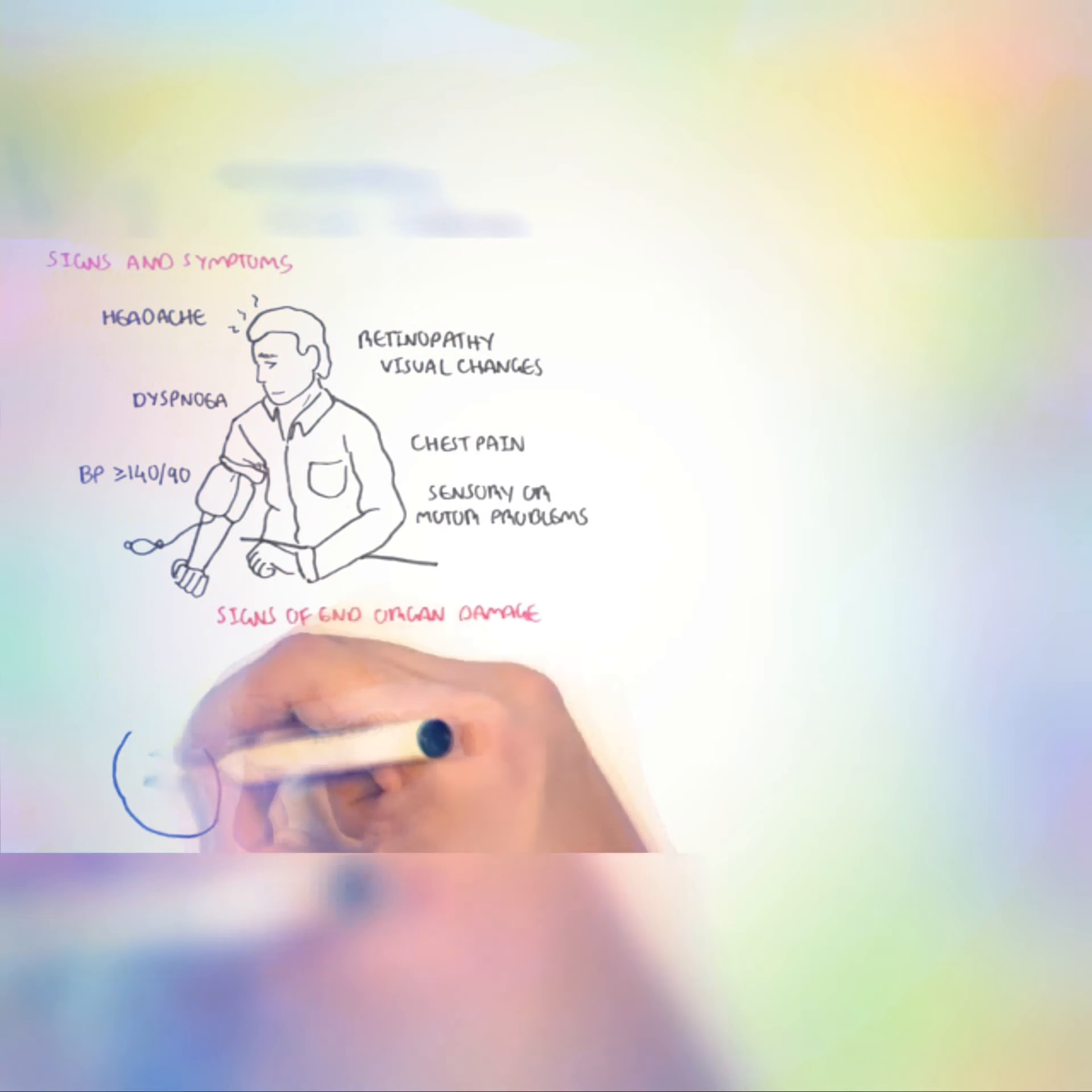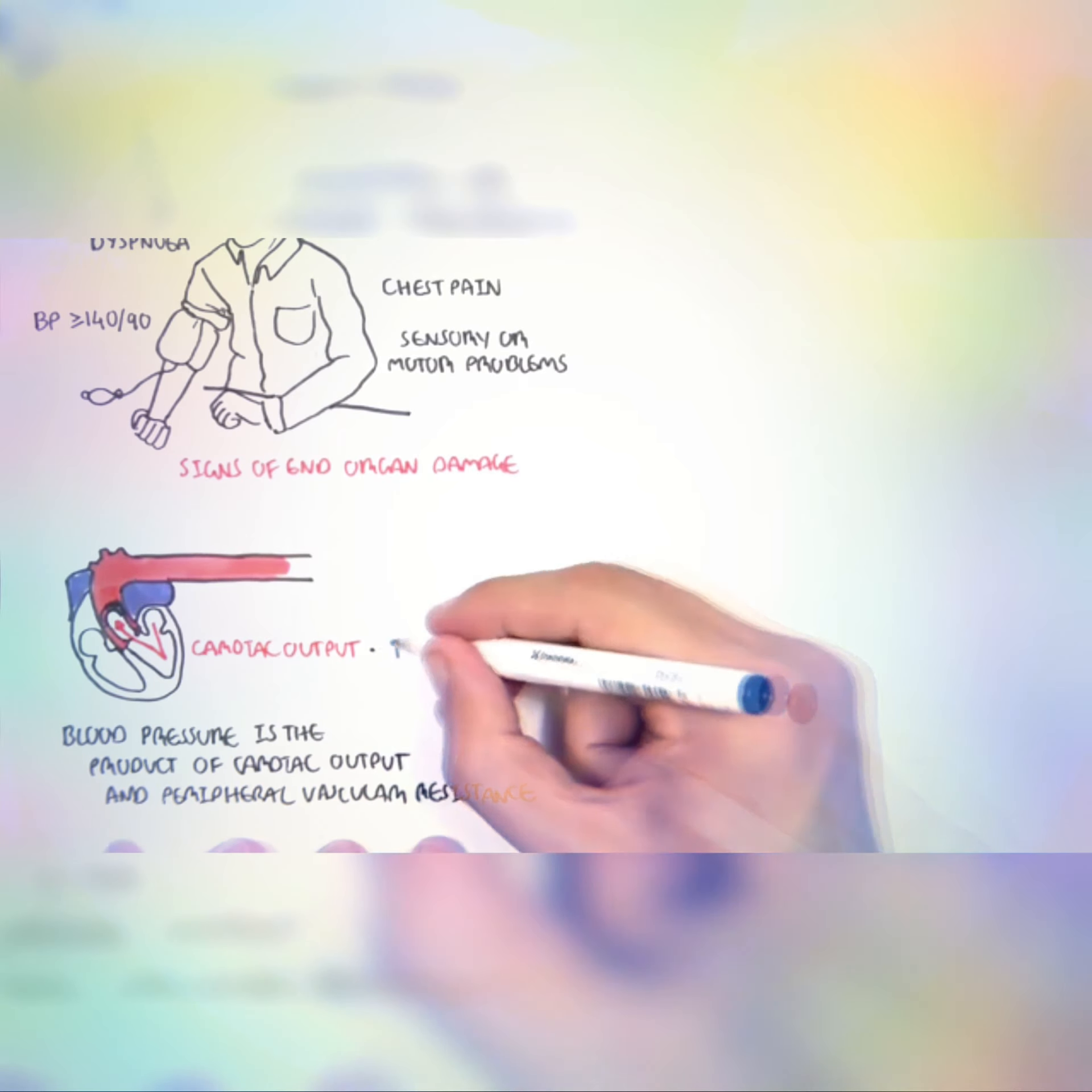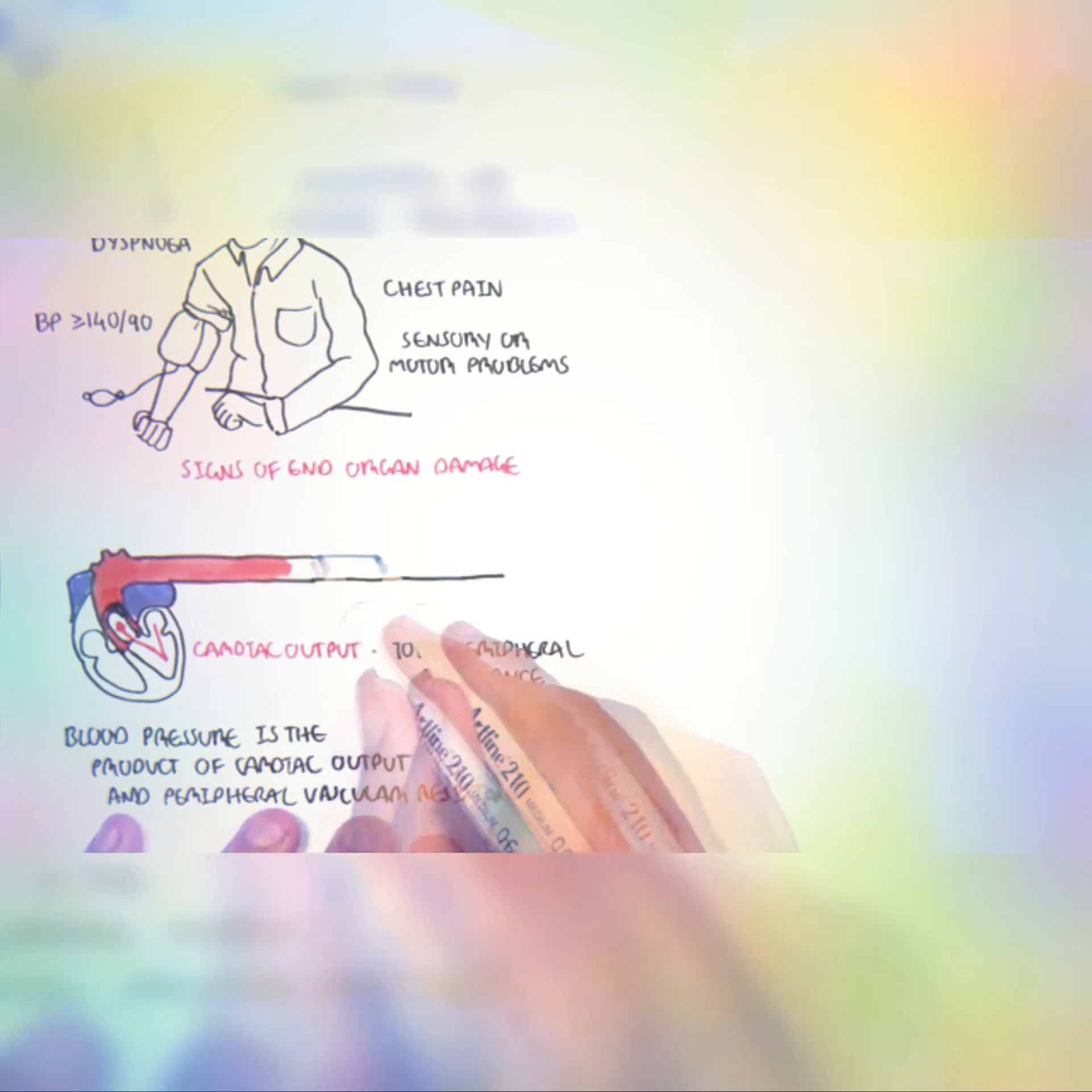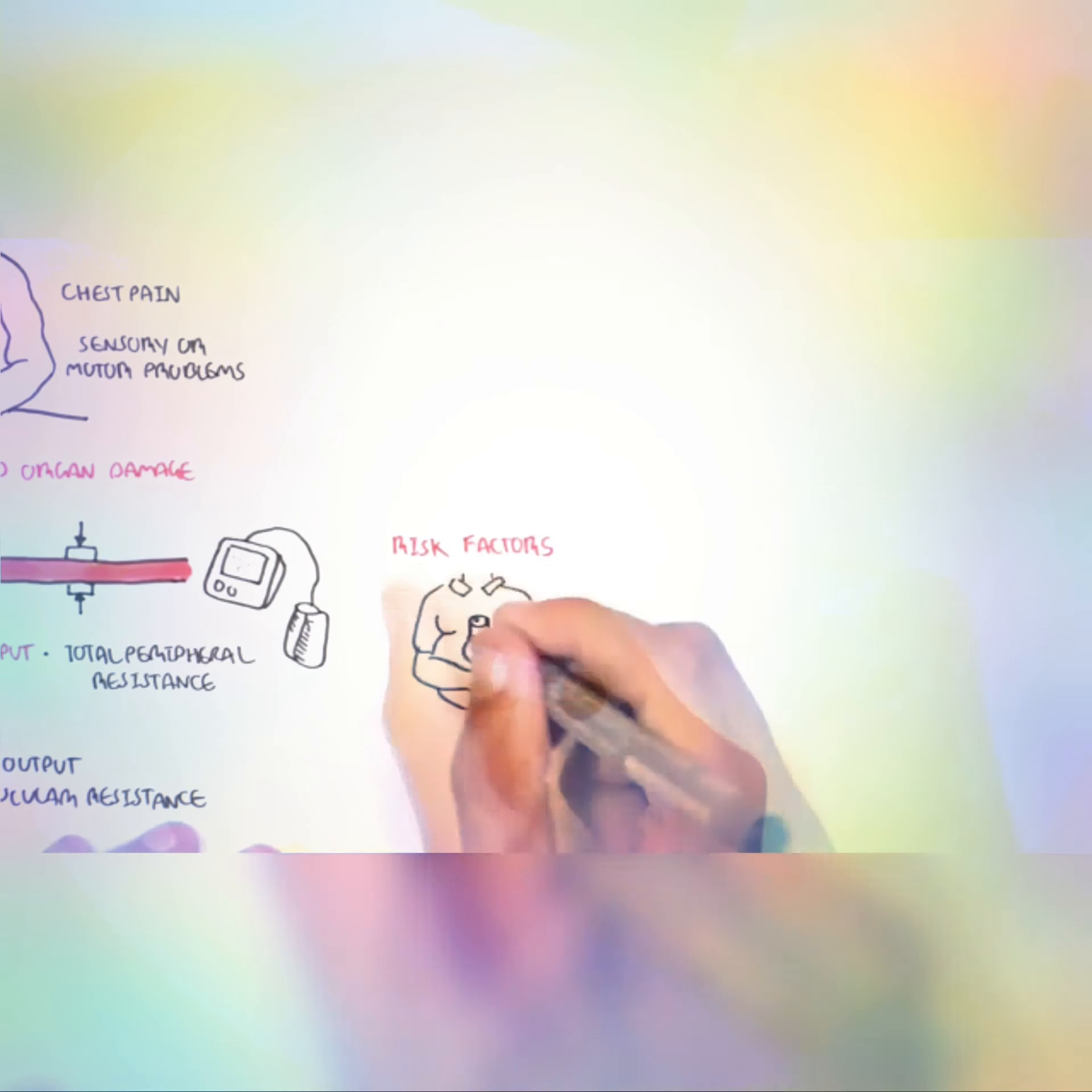So what is blood pressure? Well, it is the product of cardiac output and the total peripheral vascular resistance. So here is a heart pumping blood out. This is the cardiac output. And together with the total peripheral resistance makes up the average blood pressure.